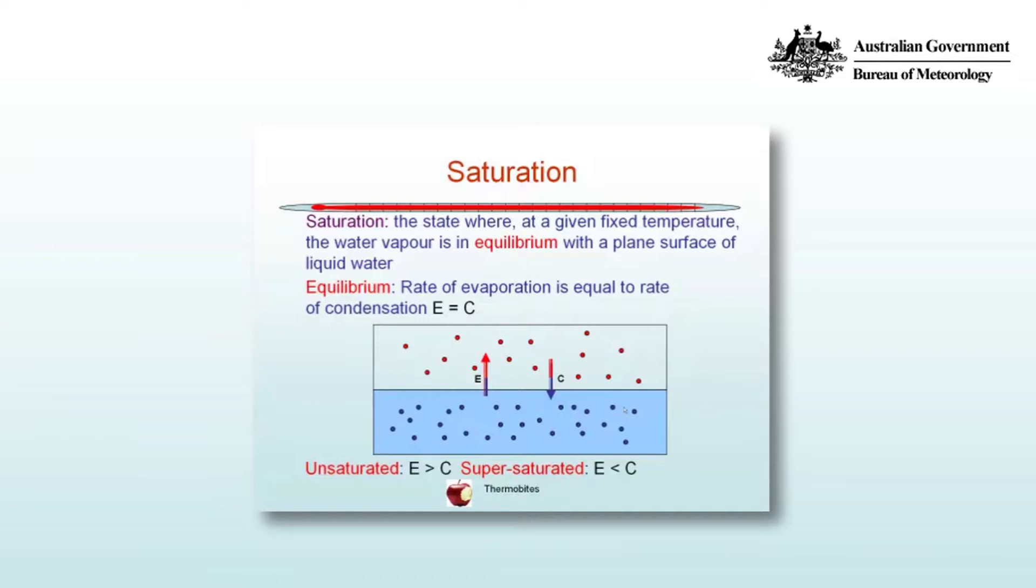Air where the evaporation rate is greater than the condensation rate is said to be unsaturated. And we can also have supersaturated air where the rate of condensation is greater than the rate of evaporation.